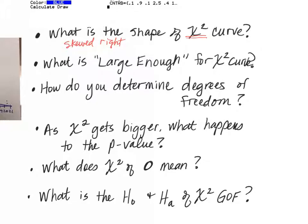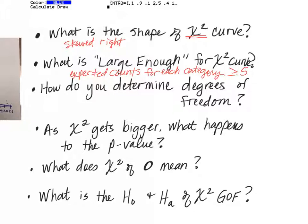What is large enough for a chi-squared curve? Expected counts. And the way you found what was expected for each category — yesterday when we did our M&Ms, we found out what was expected for each category. Expected counts for each category has to be greater than or equal to five. That is not the same thing as your sample size. That is the claimed percent times your sample size.